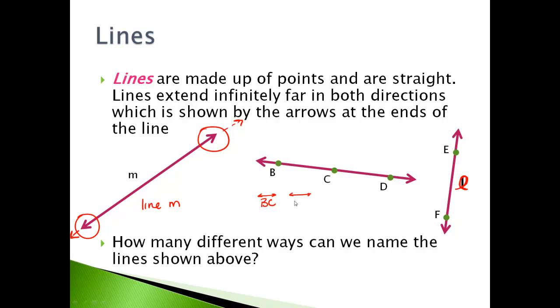You could also call it line CD. You could call it line BD. And with lines, the order is not important, so you could also call that line CB, line DC, line DB. So there's actually six different ways that you could name this line.